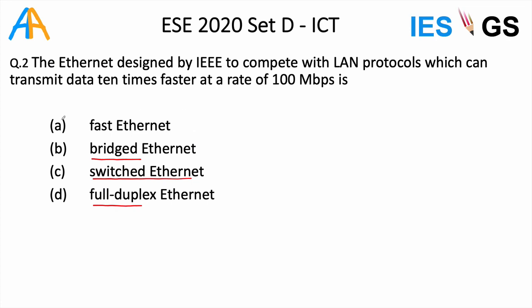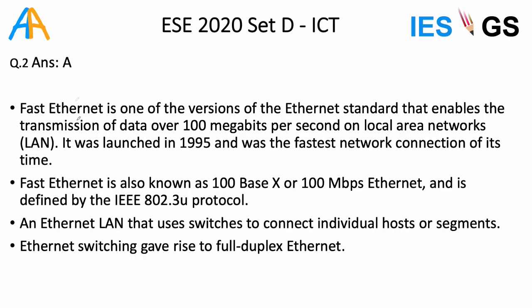Applying elimination technique, we go with option A. Fast Ethernet is one of the versions of the Ethernet standard that enables 100 Mbps data transfer. Earlier it was only 10 Mbps, so when fast Ethernet came it brought 10 times the capacity. That was a major advancement in 1995, which is why it is called fast Ethernet.